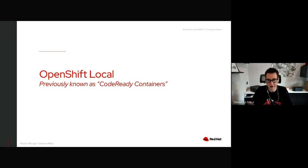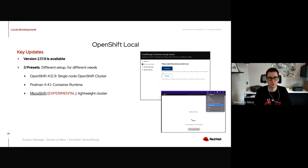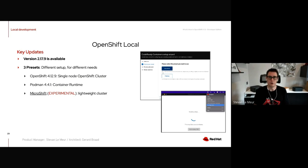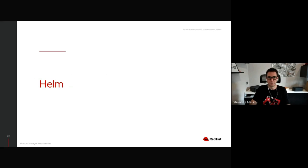OpenShift Local, previously known as CodeReady Containers — version 2.17.9 is now available. There are three different presets: a single-node OpenShift cluster providing OpenShift 4.12.9, Podman 4.4.1, and we recently introduced MicroShift as an experiment to provide a lightweight cluster that you can use to test your applications in an OpenShift environment running locally.